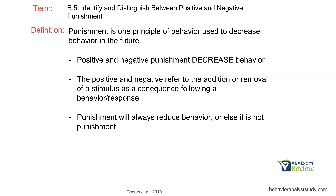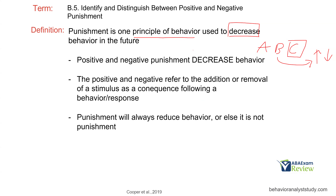What is punishment? Punishment is a principle of behavior used to decrease behavior in the future. The key word is decrease. When we have an ABC contingency and we're thinking about our consequence, we need to look at the behavior and what it is doing in the future. Is it increasing? Is it decreasing? Punishment will always decrease behavior — if that behavior is increasing, it's never going to be punishment. Don't just look at the topography of the consequence; you've got to think about how the consequence is actually changing behavior. Positive and negative punishment decrease behavior. Positive means we're adding something; negative, we're removing something. The positive and negative refer to the addition or removal of a stimulus as a consequence following a behavior response.